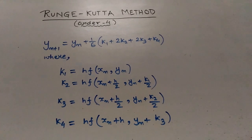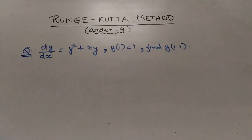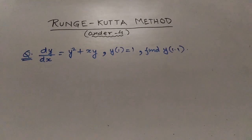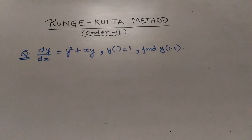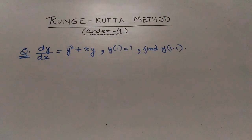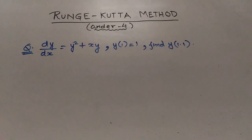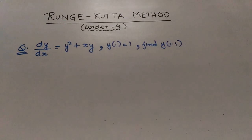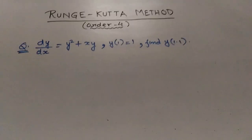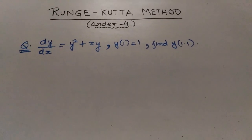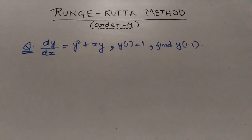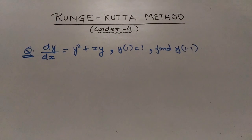Now I will show you an example. The question is: dy/dx equals y² + xy, with the initial condition y equals 1 at x equals 1. What we need to find is y at x equals 1.1.